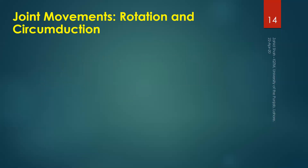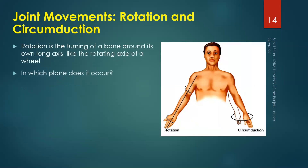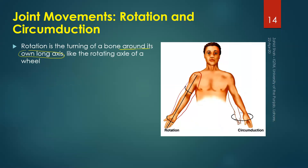Next we have rotation and circumduction. In contrast to flexion/extension and adduction/abduction, these are not just opposite movements but both are rotational movements of bones. Rotation is the turning of a bone around its own long axis — like the rotating axle of a wheel. For example, rotating the arm about its own axis is rotation.